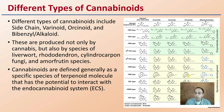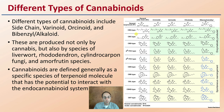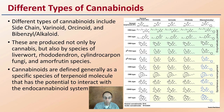There are different cannabinoids, and the different variants include side chain types as well as many others. We see a lot of familiar names: CBG, CBD, Delta-9 THC, Delta-8 THC, and CBN. We can see some of their structures as well. They are produced not only in cannabis, but also by species of liverworts, rhododendrons, other species, and even fungi.